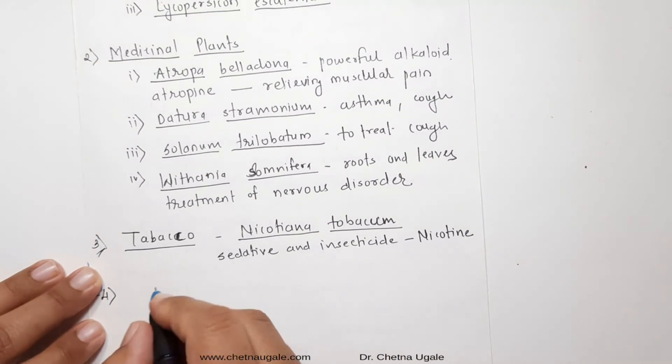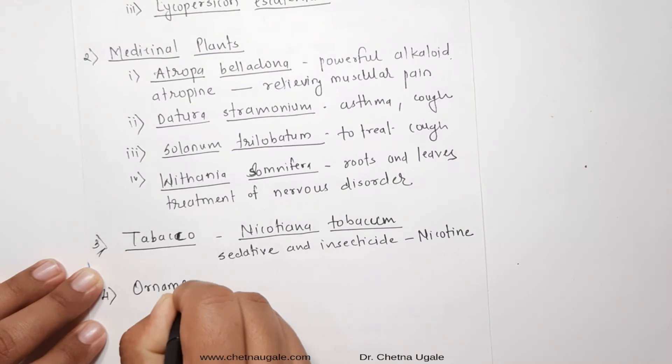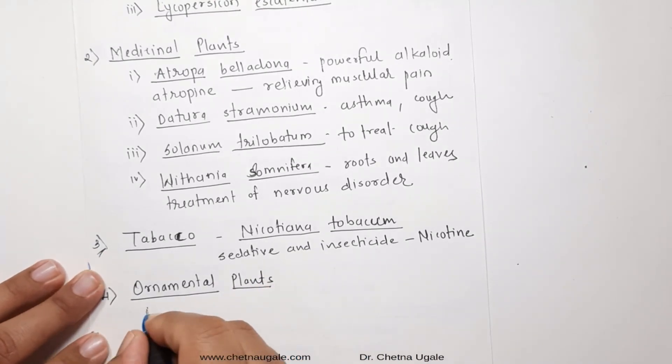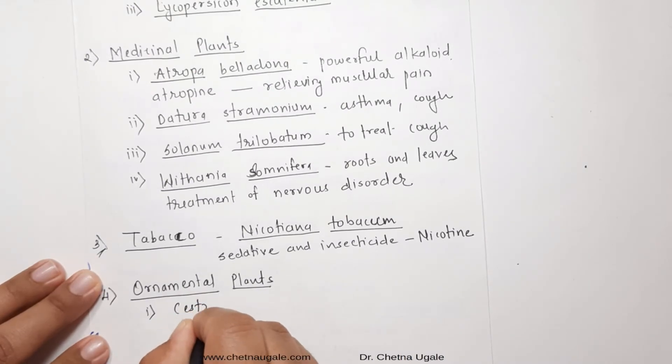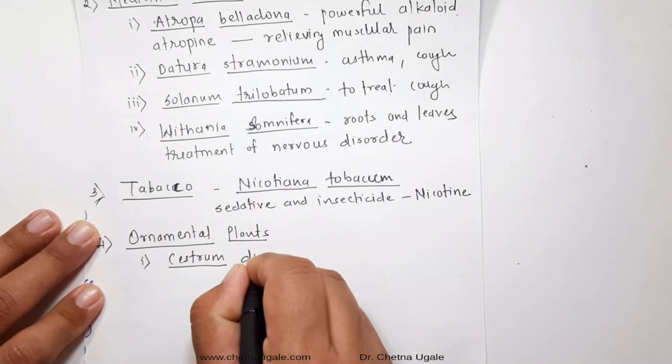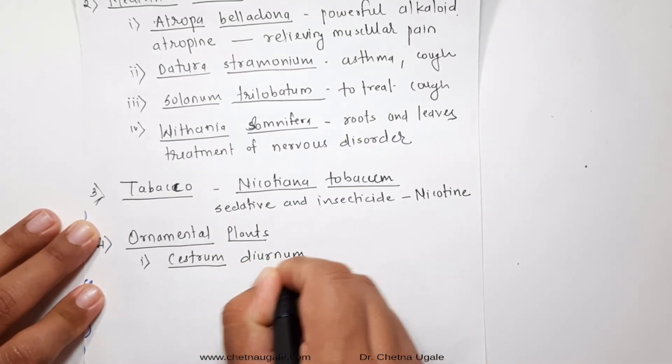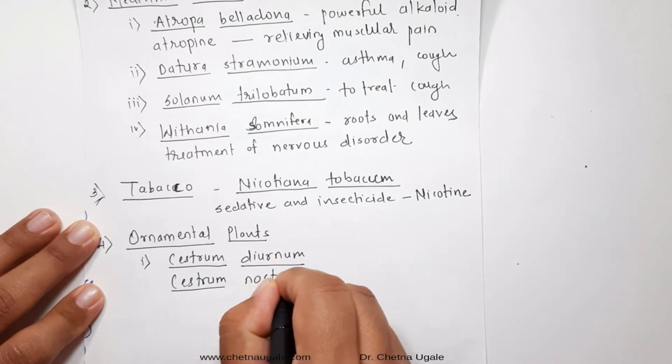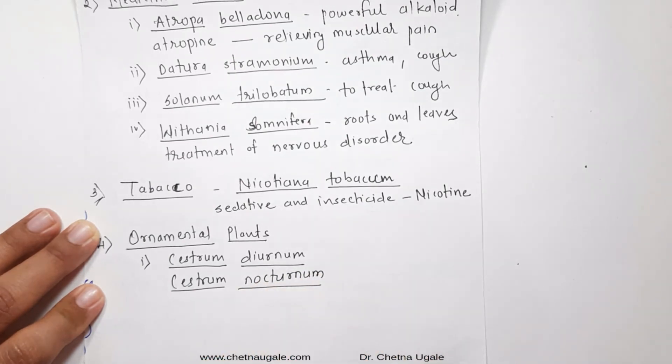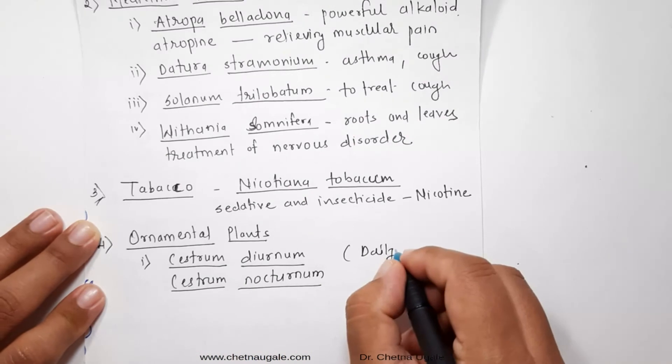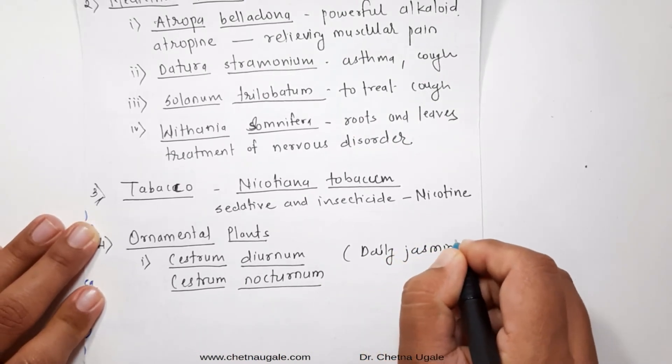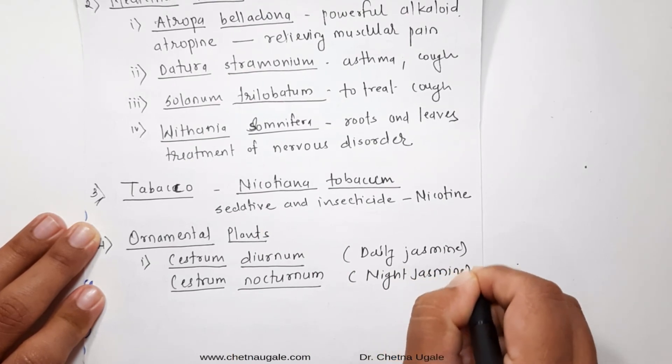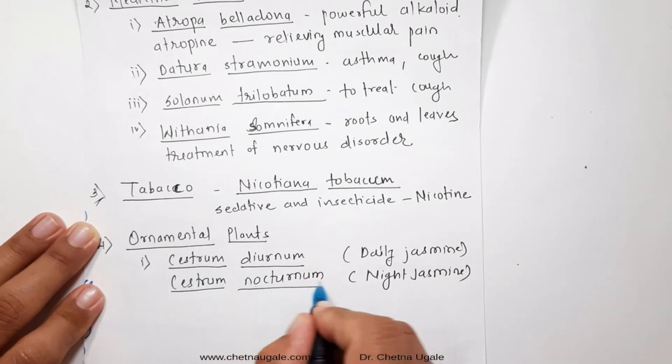The next one is the ornamental plants. Ornamental plants are generally planted to enhance the aesthetic value. Out of these, Cestrum diurnum and Cestrum nocturnum are largely planted in gardens. Cestrum diurnum is day jasmine, while Cestrum nocturnum is night jasmine. Day jasmine blooms during daytime, while Cestrum nocturnum opens the flower at night time. That's why it is called as night jasmine.